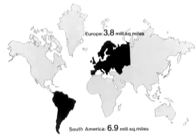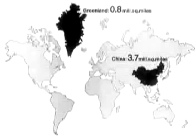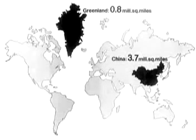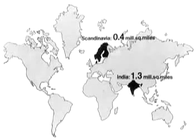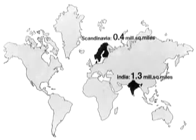Europe's 3.8 million square miles are shown as larger than South America's 6.9 million square miles. In reality, China is over four times the size of Greenland, but Mercator's map shows China as substantially smaller. Scandinavia, with only 0.4 million square miles, is shown here dwarfing India's 1.3 million square miles, which is three times larger.